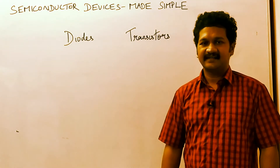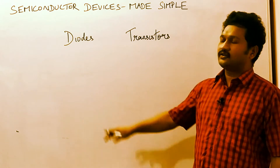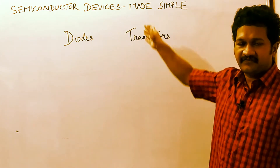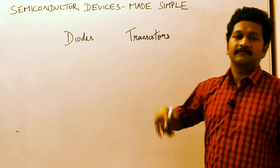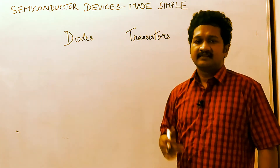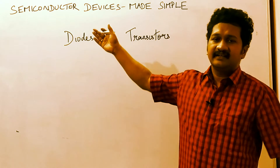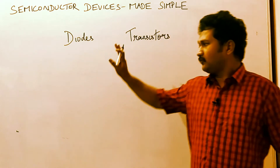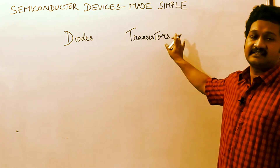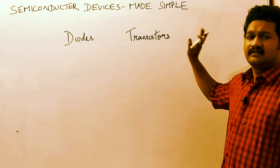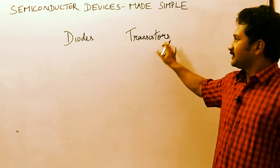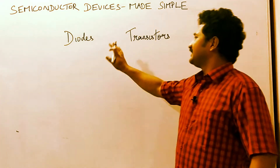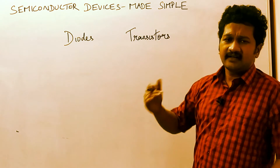Hello everyone, welcome to my channel. In this lecture series we are going to discuss diodes and transistors — the differences between them. In the previous lecture series, if you can see in the channel, there are different types of diodes — ten different types — discussed. Now we are going to step into transistors, and before that we will see the differences between diode and transistor.